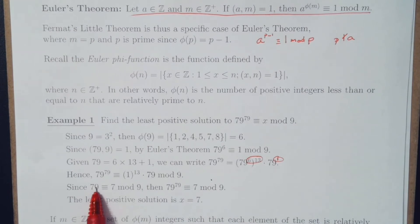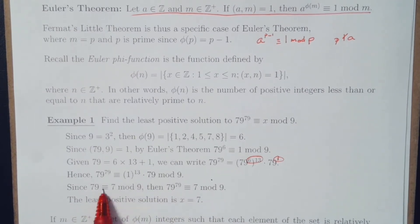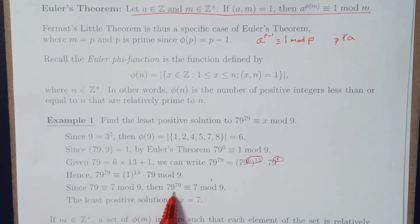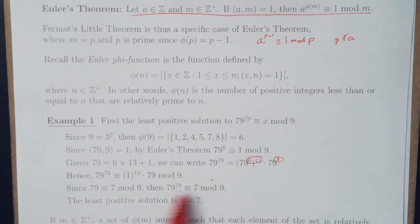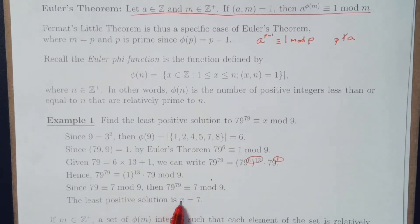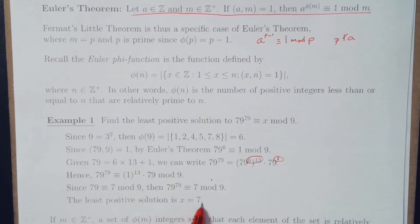Now, since 79 is equivalent to 7 mod 9, then 79 raised to the 79th power is equivalent to 7 mod 9, and that's going to be our least positive solution, x equals 7.